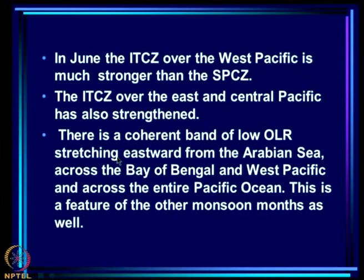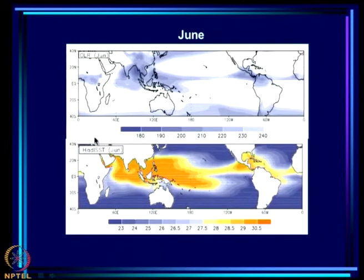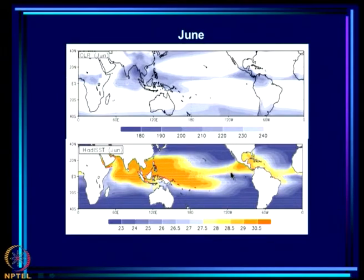In May the situation has changed — we see a very coherent band across the Pacific, the ITCZ is stronger, and there is a region of low cloud. The SST has become even warmer off the coast of the Americas, but this is all north of the equator; on the equator the cold tongue persists. In June the ITCZ over the west Pacific is much stronger than the SPCZ, and we now see a very coherent band of warm SSTs right across the Pacific.